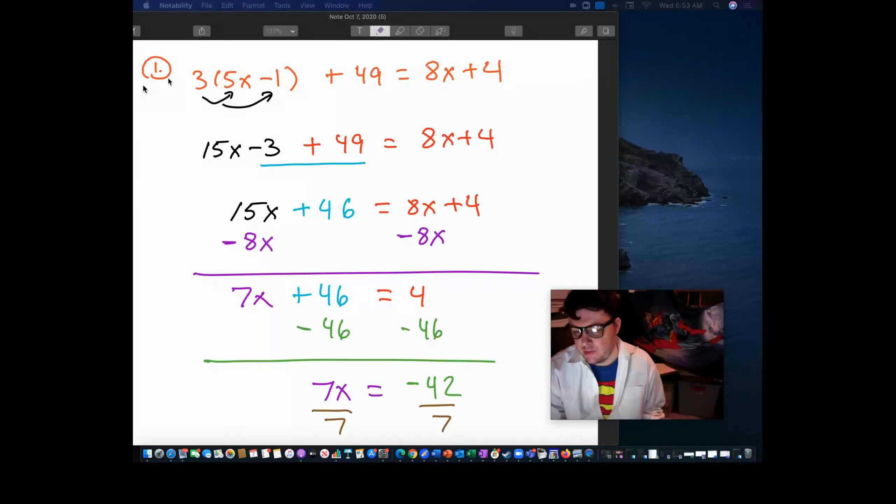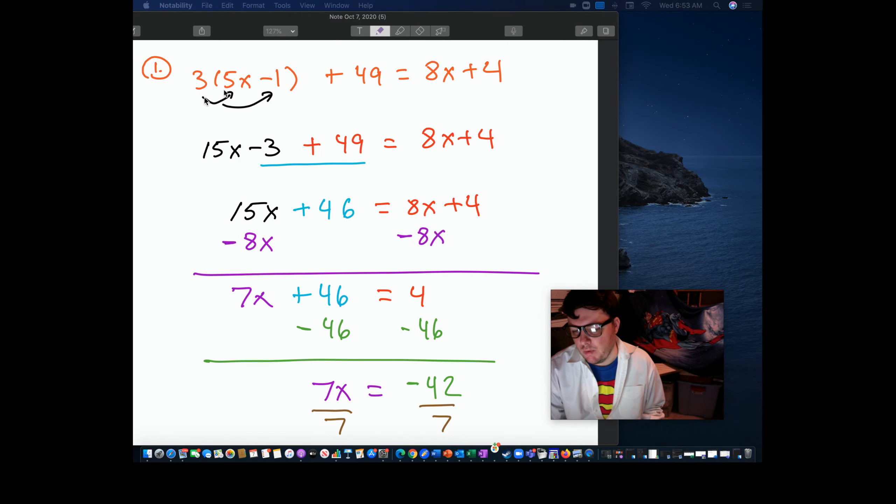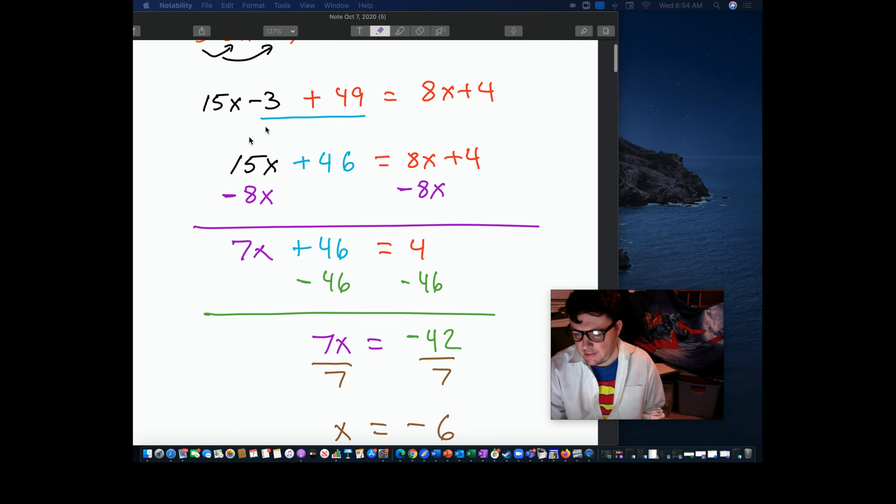So how do we approach this? Number one, what we want to do is we want to distribute three throughout because we have three times the quantity. So this will give me 15x minus 3. From here, the next line, we notice that we have negative 3 and 49. We want to combine like terms. That'll give me 46. 49 minus 3 is 46.